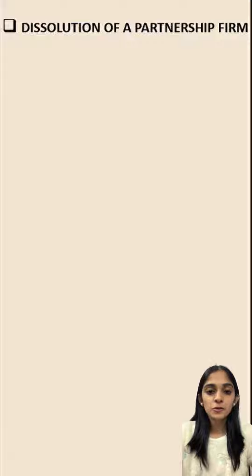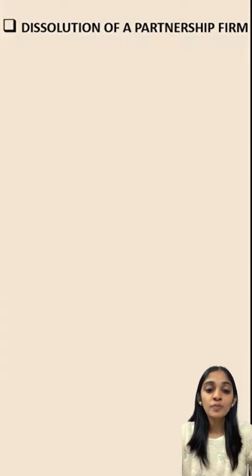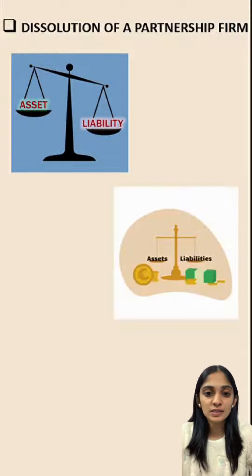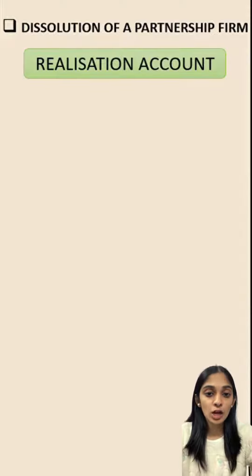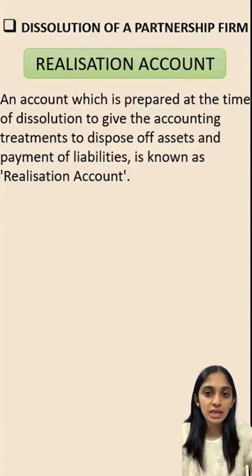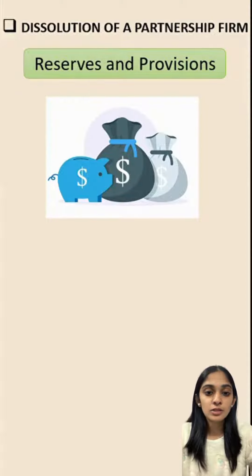Hello friends, as we have started the dissolution of partnership firm of Eva and Ethan, for closing the accounts of their firm 'Eat and Sip', first we need to disclose all the assets and liabilities. For that, we need to prepare a special account known as the Realization Account, in which all the accounting treatment regarding the disposal of assets and liabilities will be given.